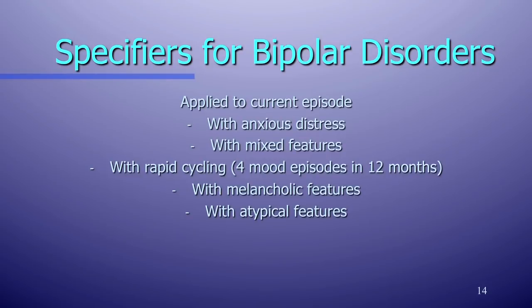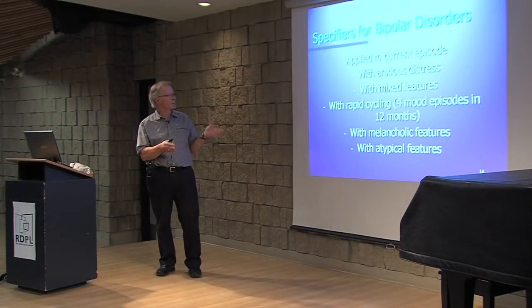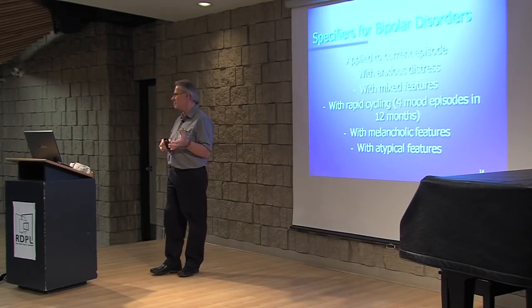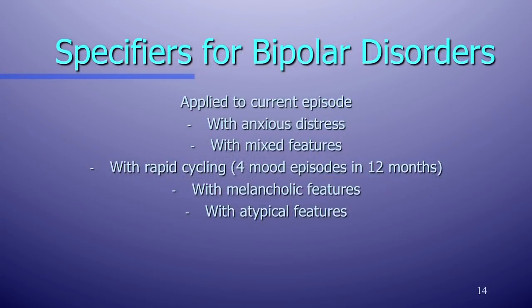In our DSM-5, we now have four disorders listed. We also have some specifiers for unique characteristics that might apply to your patient. Some people present in a manic state with incredible anxious distress — not just a little bit anxious, but people who really look like they're about to jump out of their skin. If you see somebody like that who's bipolar, you would code them as having bipolar disorder with anxious distress.